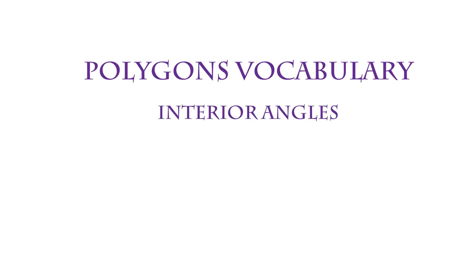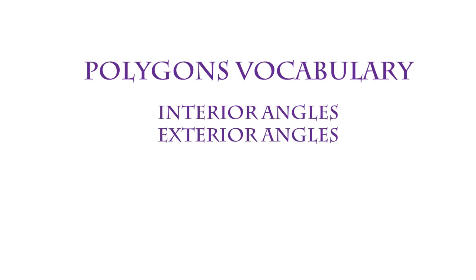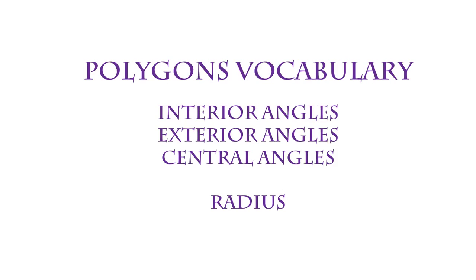One of them is an interior angle — you've already come across this, so I want to make sure you know exactly what it is. If you think of what the opposite of an interior angle would be, then you have the second term: exterior angles. And alongside those two, we also want you to know central angles. Those are the three types of angles. But there are also two other parts of polygons: the radius and the apothem. Some people get those two confused — I want to make sure you do not.